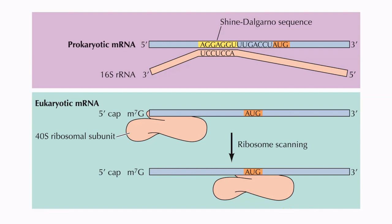Next is mRNA. In prokaryotes, the mRNA contains a sequence known as the Shine-Dalgarno sequence. This sequence binds with the 16S rRNA — the 3' side of the 16S rRNA contains a complementary sequence to the Shine-Dalgarno sequence. Complementary base pairing between the Shine-Dalgarno sequence and 16S rRNA places the first AUG codon at the P-site of the ribosome. So the correct positioning of the first codon is ensured by the Shine-Dalgarno sequence.